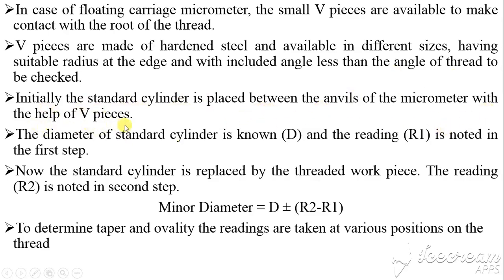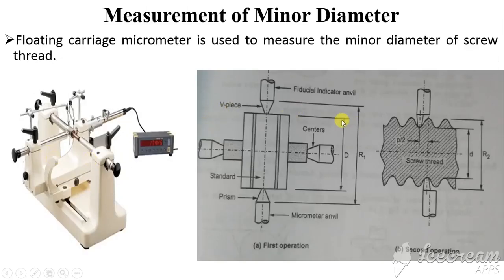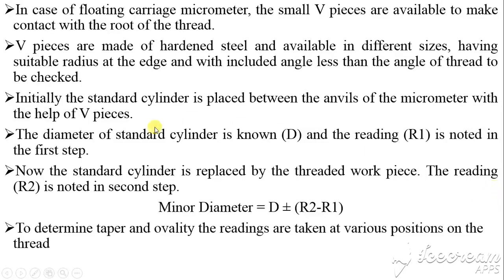The standard cylinder is placed between the anvils of the micrometer using V-pieces. Its known diameter D and reading R1 are noted. Then the standard cylinder is replaced by the thread whose minor diameter is to be found, and reading R2 is taken. The minor diameter is given by d = D ± (R2 − R1). Readings are taken at various positions along the length of the thread to account for taper and ovality.